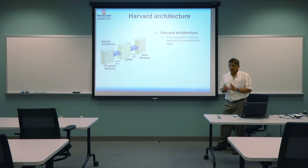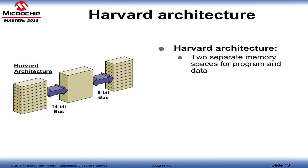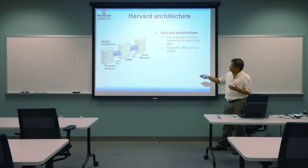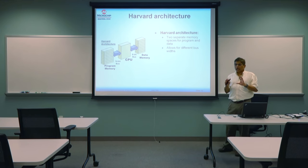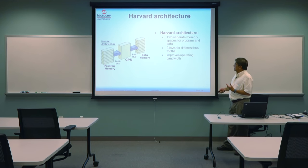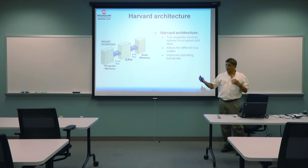The PIC16 device uses a Harvard architecture, meaning the data memory and program memory are two separate entities. This allows different bus widths — the program memory path is 14 bits wide, while the data memory path is 8 bits wide. Having two separate paths improves bandwidth operation, allowing faster execution of instructions.